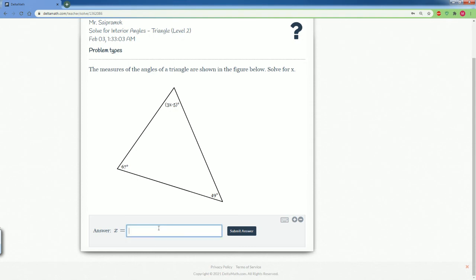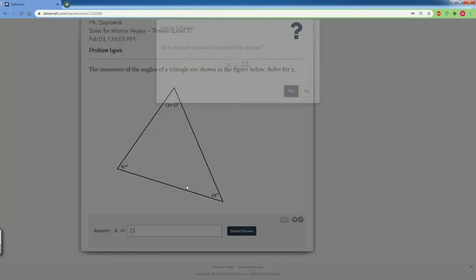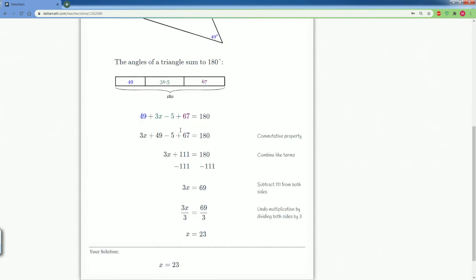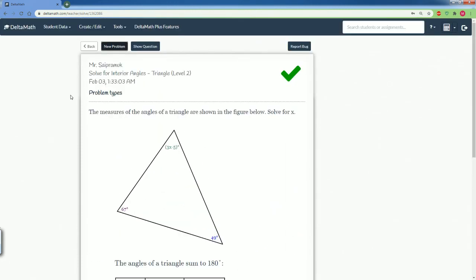All right. So let's put that here. 23. We submit and that is it. We get that answer. Good job. All right. So there you go. Those are how you solve for the interior angles within a triangle for level two.